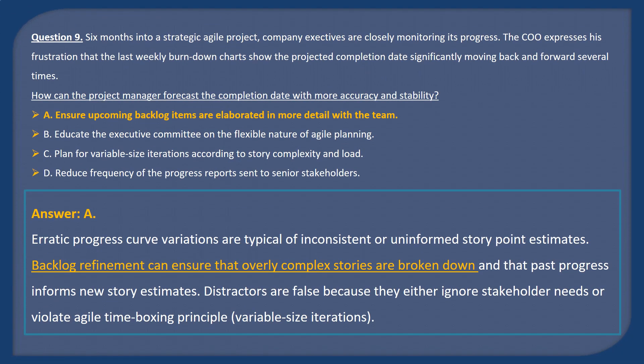Answer A. Erratic progress curve variations are typical of inconsistent or uninformed story point estimates. Backlog refinement can ensure that overly complex stories are broken down and that past progress informs new story estimates. Distractors are false because they either ignore stakeholder needs or violate Agile timeboxing principles, such as variable-sized iterations.